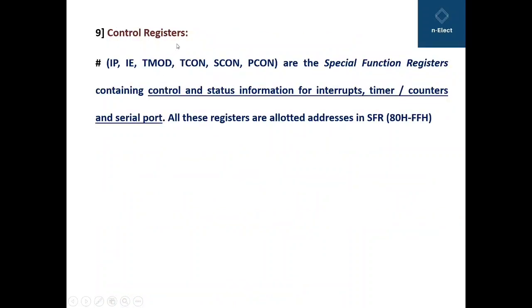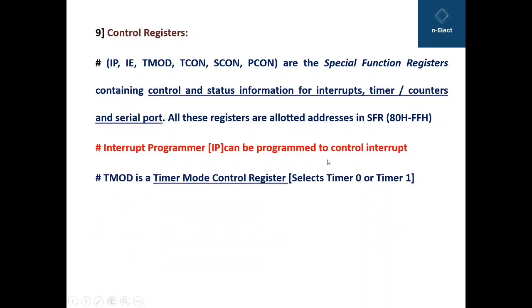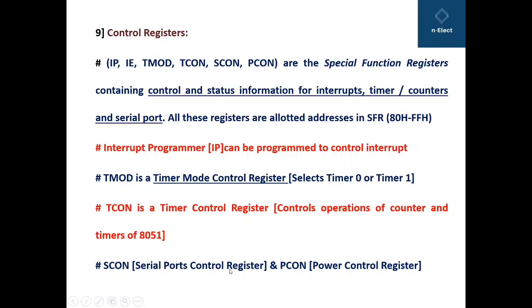Then there are different control registers like IP that is interrupt priority, IE that is interrupt enable, then timer mode, timer control, serial control and power control. Are the special function registers containing control and status information for interrupt, timer counters and serial ports. All these registers are also allotted the addresses in the special function register address range that is 80H to FFH. Interrupt programmer can be programmed to control the interrupts. T-MOD is a timer mode control register which selects either timer 0 or timer 1. T-CON is a timer control register which controls the operation of counter and timers of 8051. S-CON is a serial port control register or serial control register and P-CON is a power control register which is used in power management.